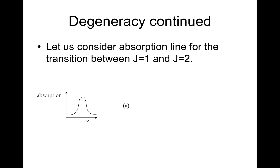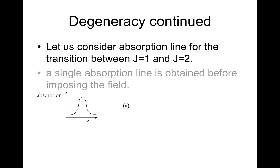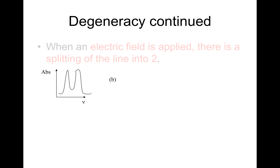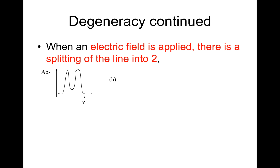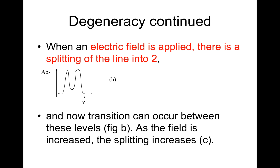Consider the absorption line for the transition between j equals 1 to j equals 2 — an absorption band of absorption plotted against frequency. In diagram A, a single absorption line is obtained before imposing the field. When an electric field is applied, there is a splitting of the line into two, as shown in figure B. As the field is increased, the splitting increases, giving figure C, where the splitting between the two lines is much bigger than initially.